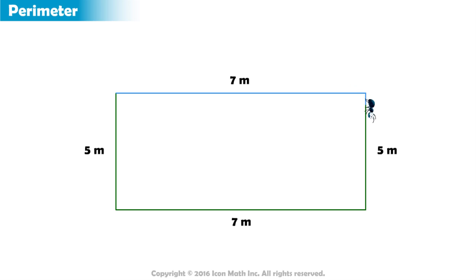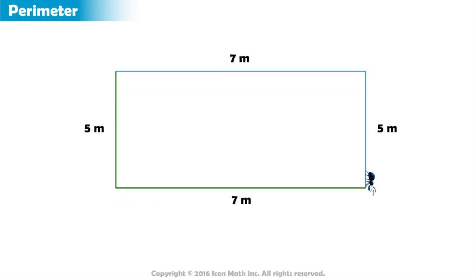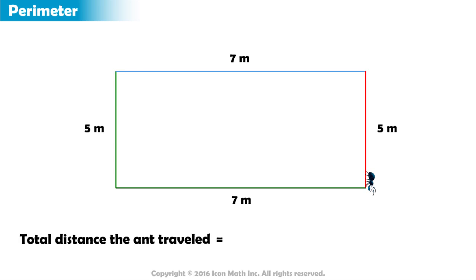The ant now faces downwards and starts moving in a straight line until it reaches the bottom right corner. At this point, the ant has traveled a total distance equal to the length of the top side plus the length of the right side of the rectangle, or 7 meters plus 5 meters.